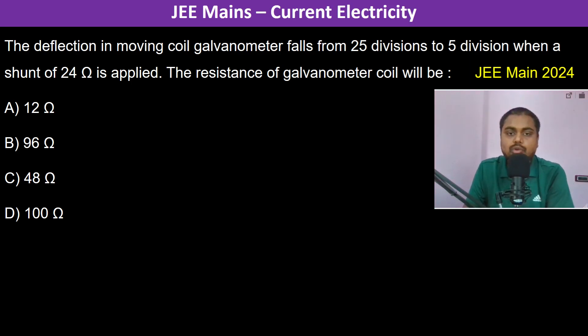The deflection in a moving coil galvanometer falls from 25 divisions to 5 divisions when a shunt of 24 ohms is applied. The resistance of the galvanometer will be - okay, so the galvanometer is reading, let's say, current I.